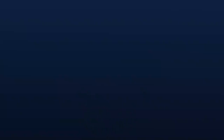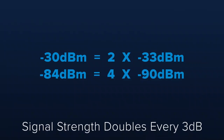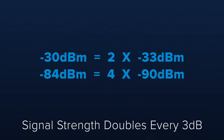Keep in mind that because DB and DBM are logarithmic, the normal ways we are used to thinking about magnitudes no longer apply. For example, a negative 30 DBM signal is twice as powerful as a negative 33 DBM signal, and a negative 84 DBM signal is four times as powerful as a negative 90 DBM signal. The signal strength doubles every 3 DB.